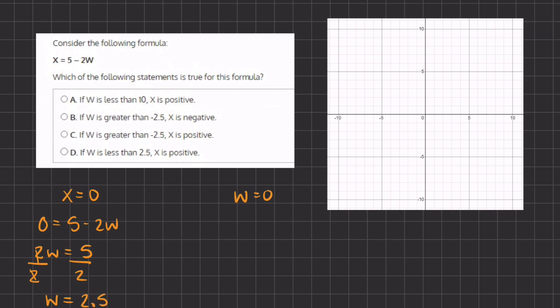Alright, and our second point is when w equals 0. So if we plug that in, we have x equals 5 minus 2 times 0. So we have x equals 5.